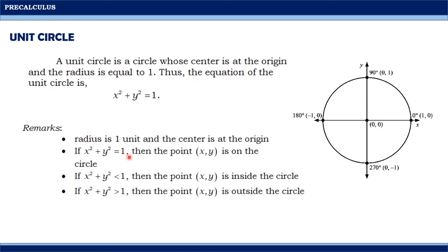Note the following about the unit circle. The radius is 1 unit and the center is at the origin. If x squared plus y squared equals 1, then the point (x, y) is on the circle. If x squared plus y squared is less than 1, then the point (x, y) is inside the circle. And if x squared plus y squared is greater than 1, then the point (x, y) is outside the circle.